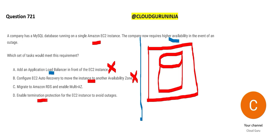Termination protection — what is this? It's for accidental termination of EC2 by mistake; if you want to avoid that, you use it. It is similar to using a condom — you use it because you want to avoid an accidental outcome. Here, termination protection avoids accidentally deleting or terminating the instance. But in this case, we are not talking about accidental issues — we are talking about something really bad happening, like an earthquake or power outage causing your EC2 to shut down. This is a disaster solution, not an accidental one.